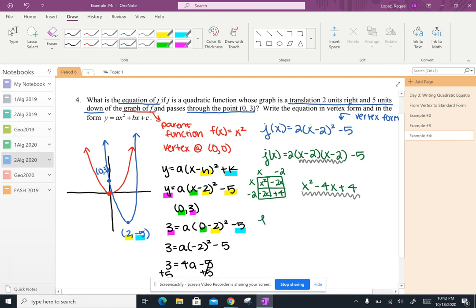So your equation now looks like j of x equals two times x squared minus four x plus four. And then don't forget to bring down that minus five all the way at the very end. This is that minus five I'm talking about. Don't forget that.